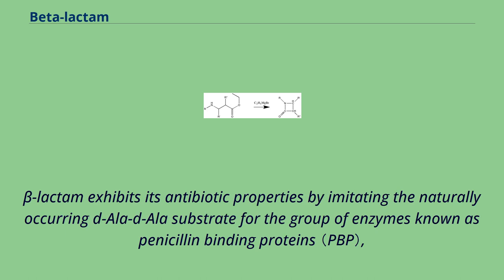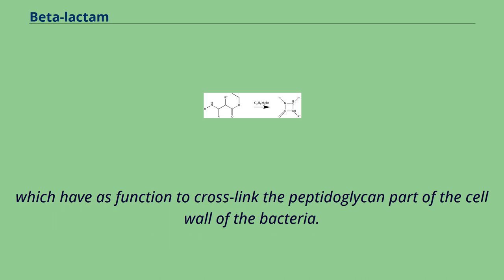Beta-lactam exhibits its antibiotic properties by imitating the naturally occurring D-ala-D-ala substrate for the group of enzymes known as penicillin-binding proteins, which function to cross-link the peptidoglycan part of the cell wall of the bacteria.